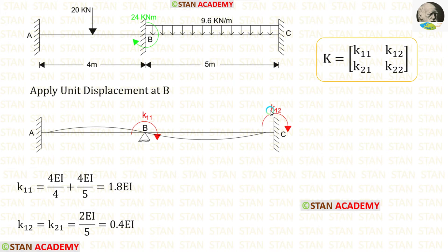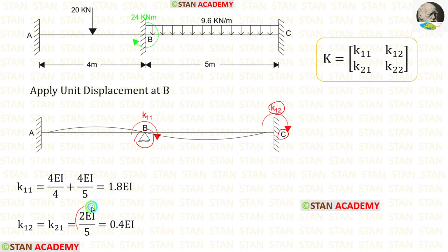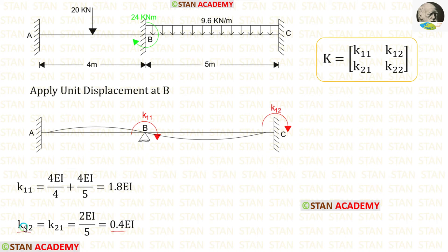Now let us find K12. From point C we look at the other end B, which has a hinged support. Since the far end is hinged, the formula is 2EI/L with L = 5. Finally, K12 equals 0.4EI. The values of K12 and K21 are the same.